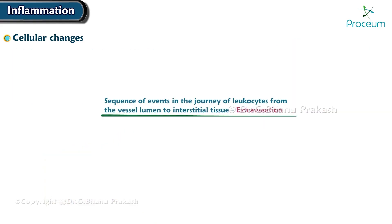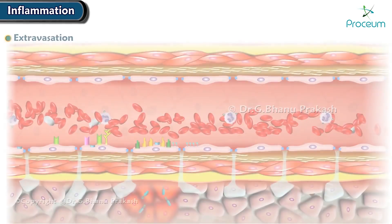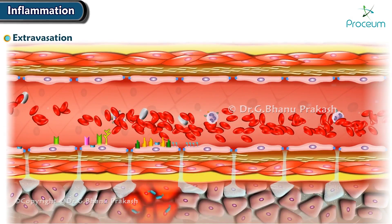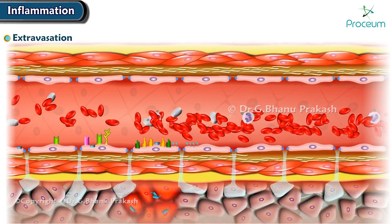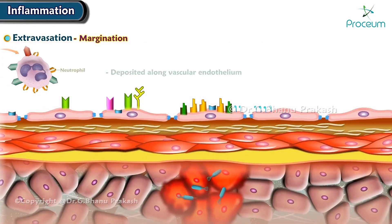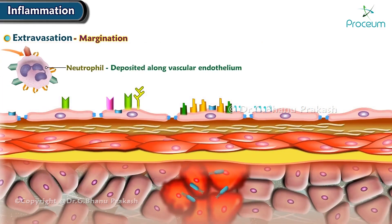The sequence of events in the journey of leukocytes from the vessel lumen to interstitial tissue is called extravasation. Extravasation has the following steps. First, margination — leukocytes, especially neutrophils, get deposited along the vascular endothelium. This is called margination.